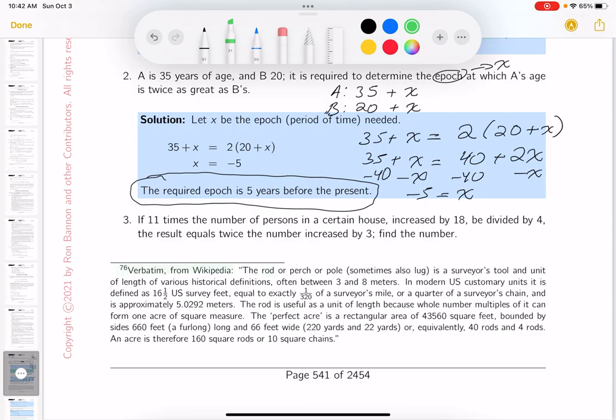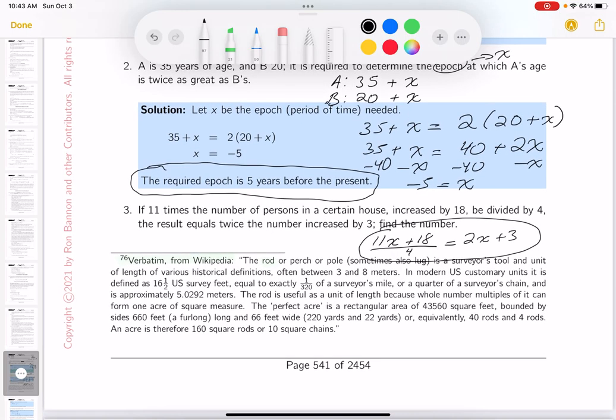So let's go to the next one. And the next one, I'm reading it. And my understanding of reading these problems over here is, do I understand what they want? So they say 11 times the number of persons in a certain house increased by 18, be divided by four. The result equals twice the number increased by three. Find the number. So I'm going to say the number to me represents the number of people in this certain house. So let me write this down for you. And what does it say? 11, I'm just reading left to right, times the number, this number of people in the house, increased by 18. They go on to say is divided by four. They say the result equals twice the number increased by three.